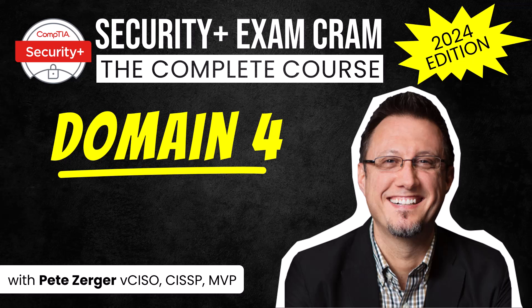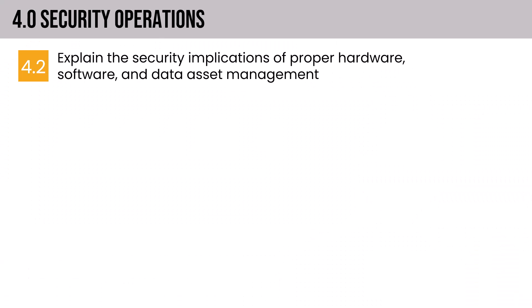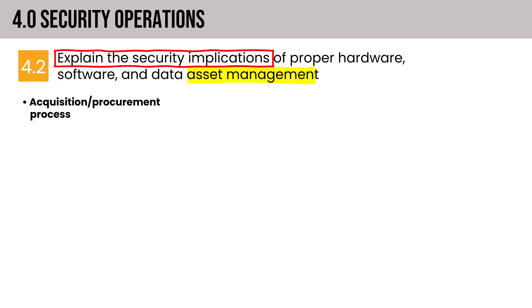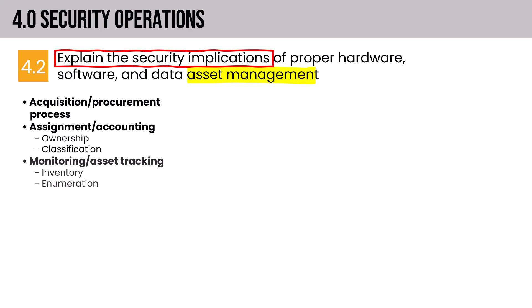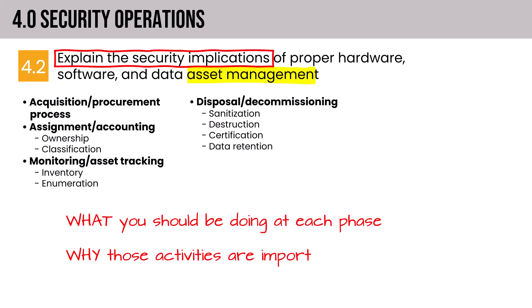Here in Section 4.2, we're going to focus on asset management. The syllabus challenges us to explain the security implications of proper hardware, software, and data asset management. We'll step through the entire asset lifecycle from acquisition and procurement to assignment and accounting, where we determine who owns the asset and what is its proper classification, on to monitoring and tracking, and finally disposal and decommissioning. There's certainly some nuance to unpack when it comes to disposal of hardware versus disposal of data.